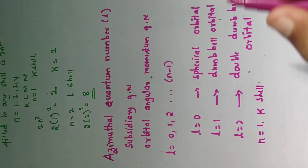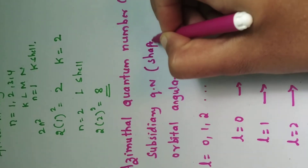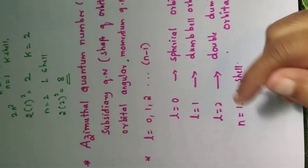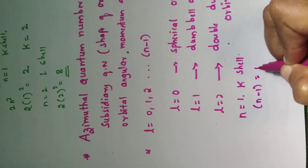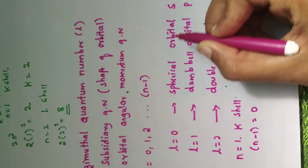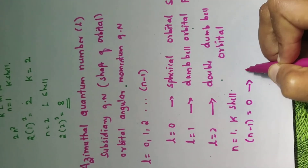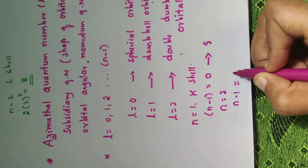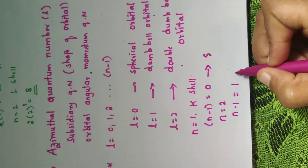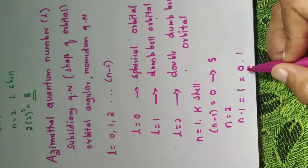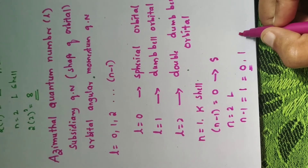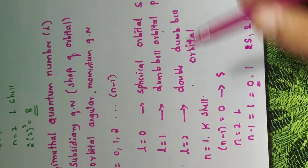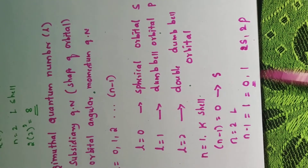The azimuthal quantum number gives the shape of the orbital. When n equals 1, that is in the K shell, n minus 1 equals 0, so l = 0 only, which represents a spherical orbital — meaning in the K shell only S orbitals can be filled. When n equals 2, n minus 1 equals 1, so l can be 0 and 1, meaning in the L shell both 2S and 2P orbitals can be filled.